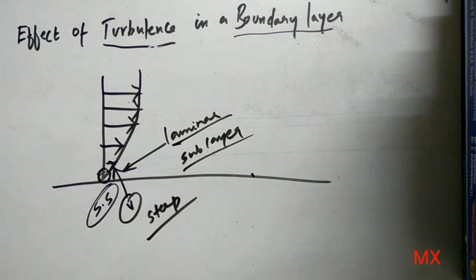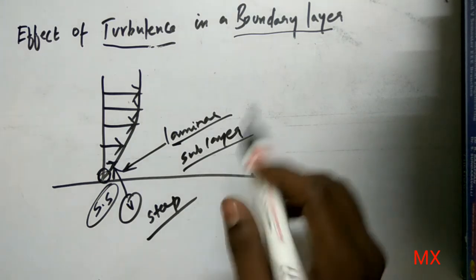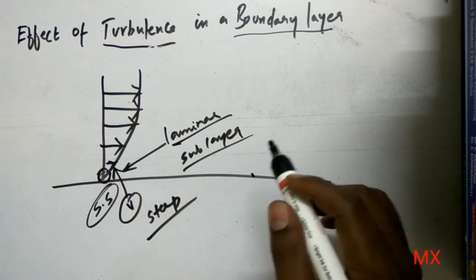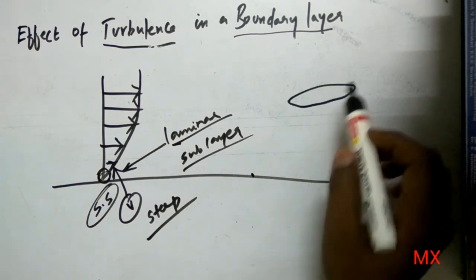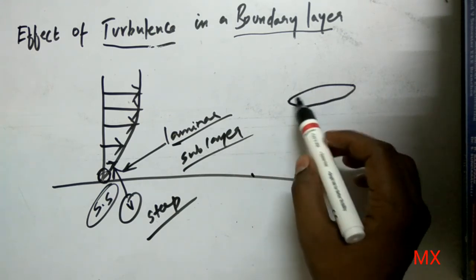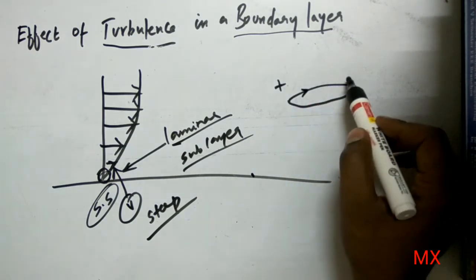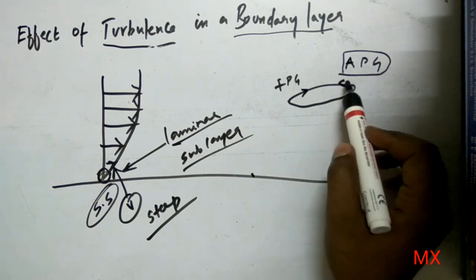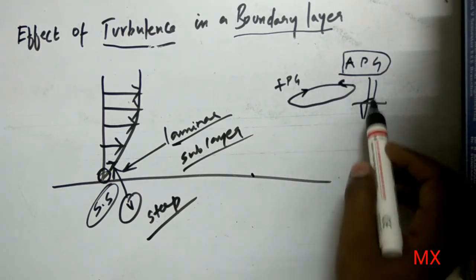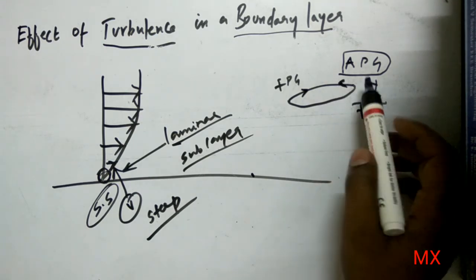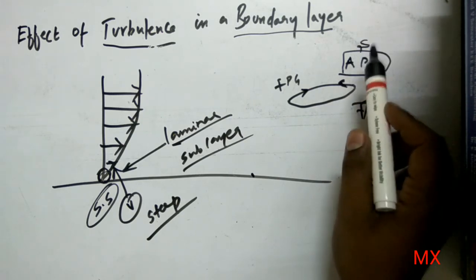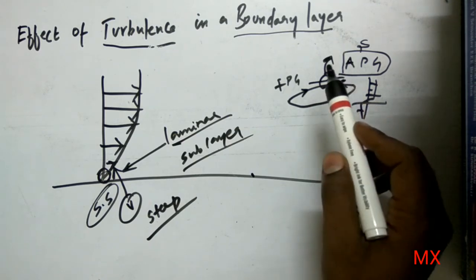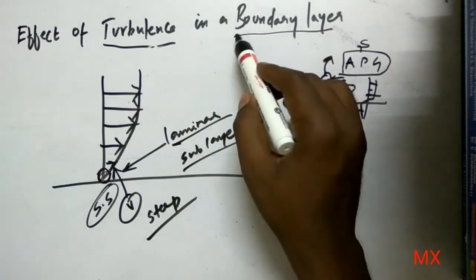If you want to understand this video clearly, watching this video alone is not enough — I will provide a link in the description to a video about what a boundary layer is. In that video we discussed that the inside of a boundary layer can be reversible. There will be a favorable pressure gradient on one side, and the opposite side is the adverse pressure gradient. A strong adverse pressure gradient causes the reverse flow, and when both flows collide there will be a separation of the boundary layer — see the description link for that video.